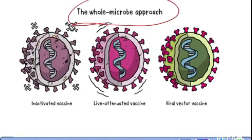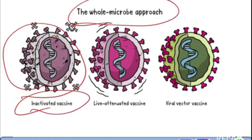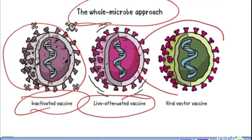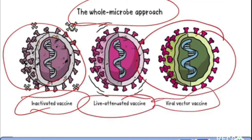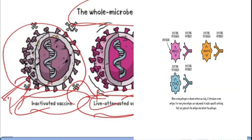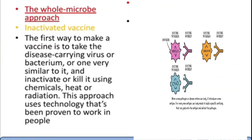This is a whole microbe approach where the whole microbe — the whole virus — has been taken. This is an inactivated vaccine, this is a live attenuated vaccine, and these are viral vector vaccines. What is the difference between inactivated and live attenuated vaccine? In an inactivated vaccine, the virus is killed, whereas in a live attenuated vaccine, the virus is weakened. Let's understand one by one what the whole microbe approach is.